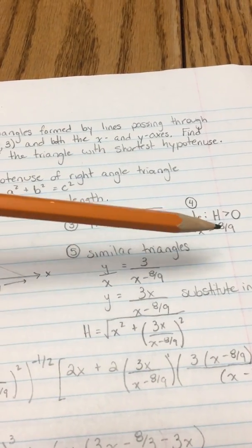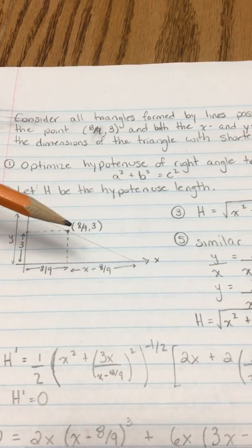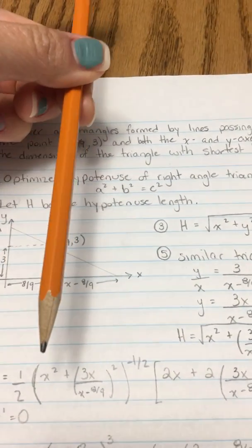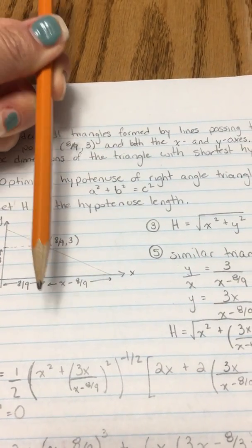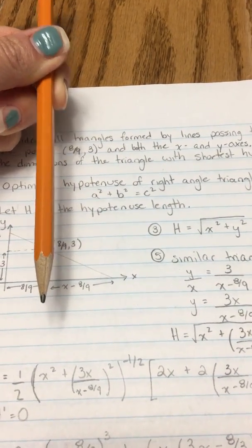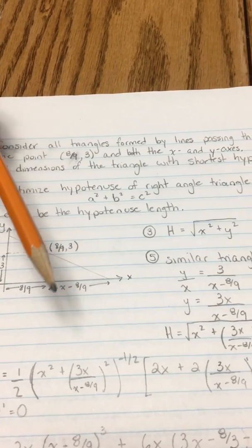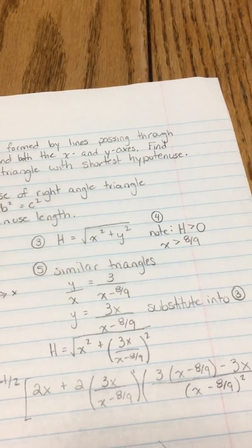We also know that x has to be greater than 8/9 because obviously if we connect 8/9 vertically hitting x at 8/9 we're never going to hit the y-axis, so it's not going to give us a triangle. So the x value has to be something bigger than 8/9 as a restriction.